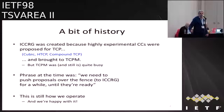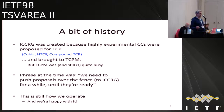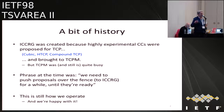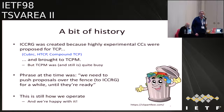ICCRG was created because there were all these proposals on new congestion controls — cubic, HTCP, Compound TCP — brought to TCPM, and TCPM was busy. They needed a place where these people could go, discuss, maybe give up, or continue and come back pre-evaluated. The phrase was: we need a place where we can push proposals over the fence and they can bake there until they're ready. We're the happy trash can of the IETF — stuff comes in, bakes there, and comes out beautiful and shiny.